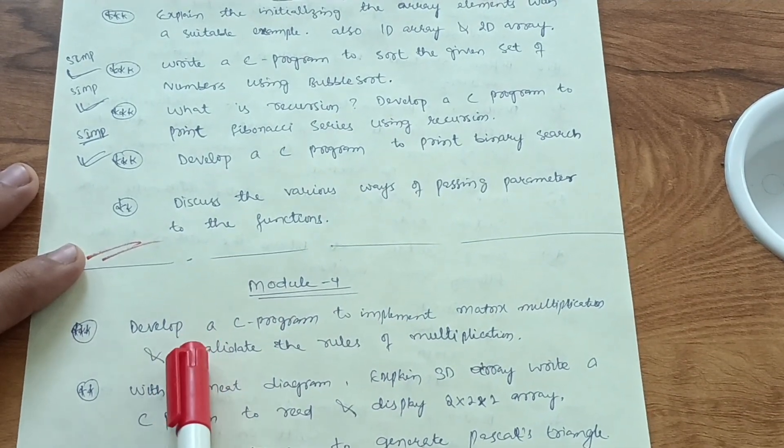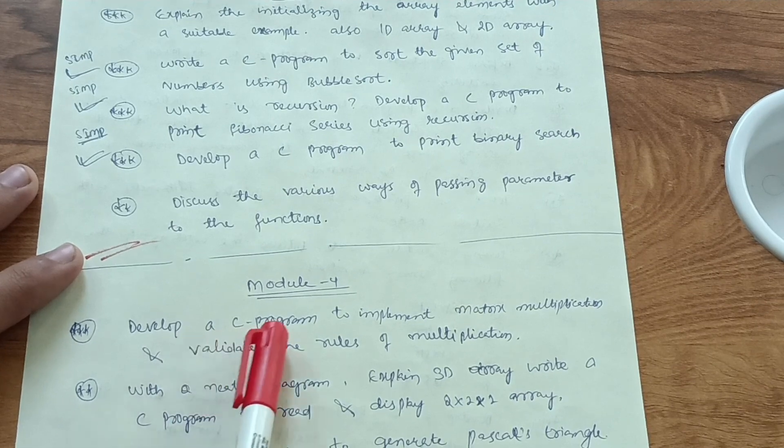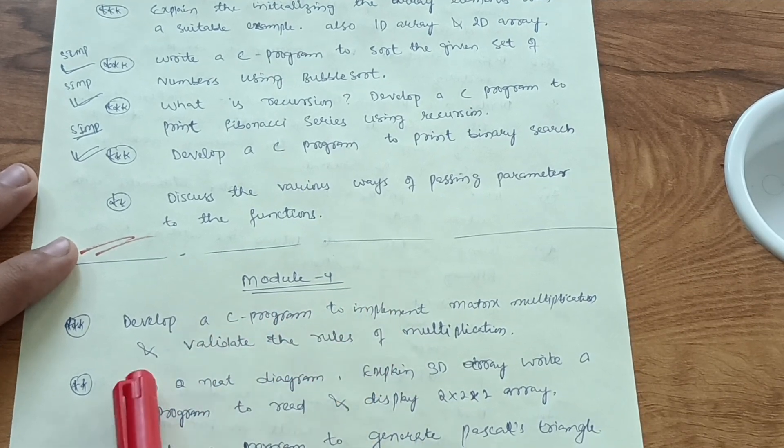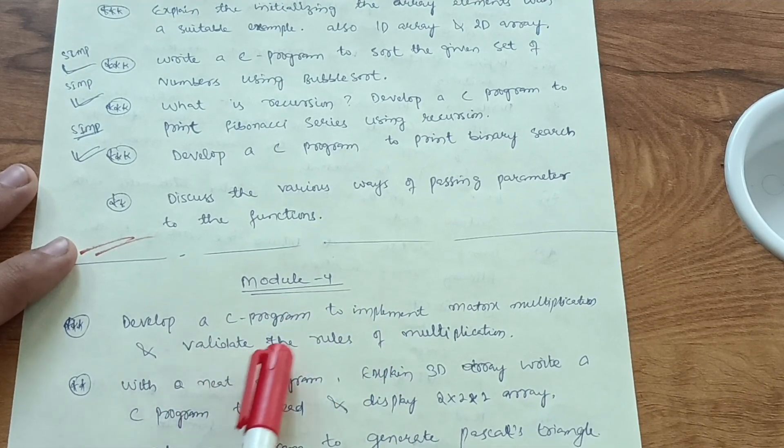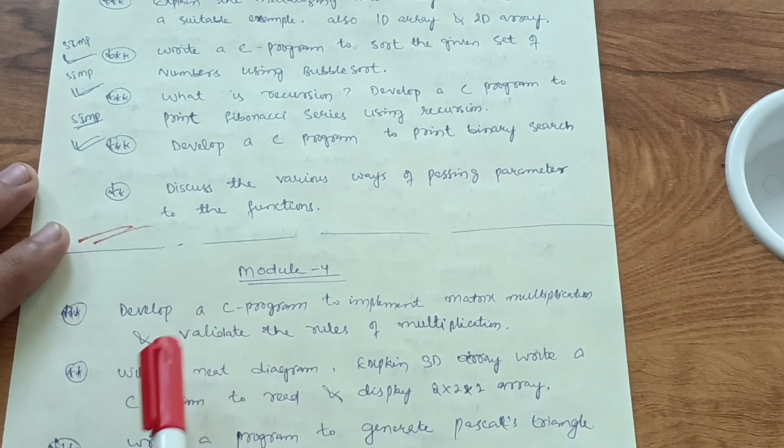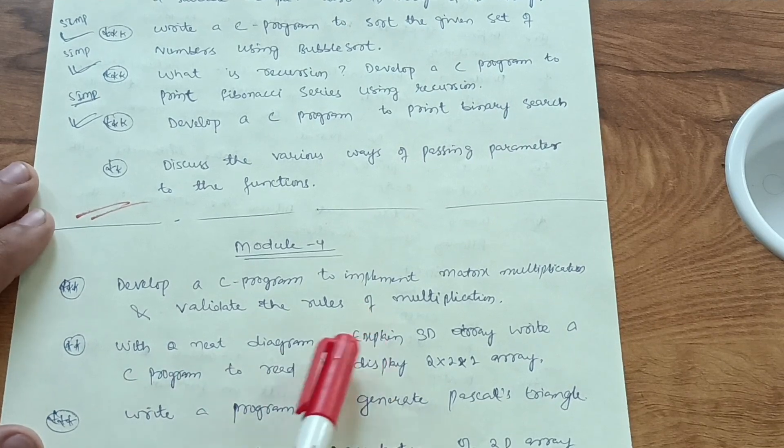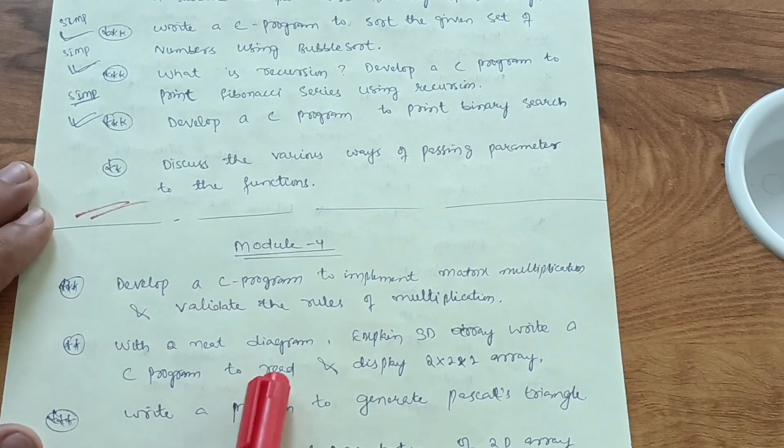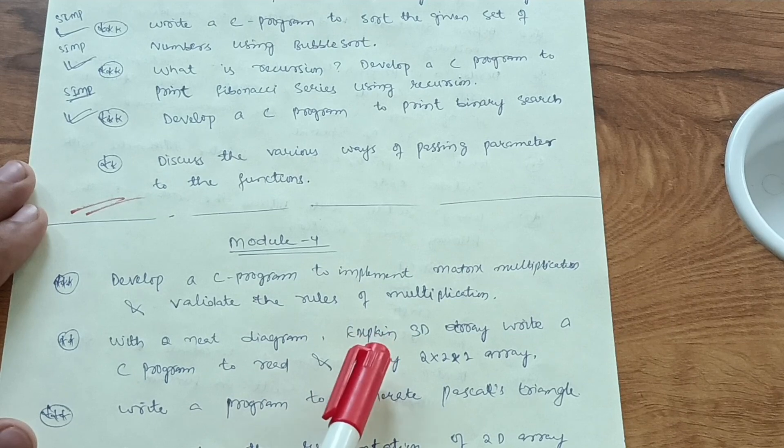Then module 4 comes up, in which you have to focus on some programs like develop a C program to implement matrix multiplication and validate the rules of multiplication. This is a most important question, so focus on this program. And with the neat diagram explain 3D array.